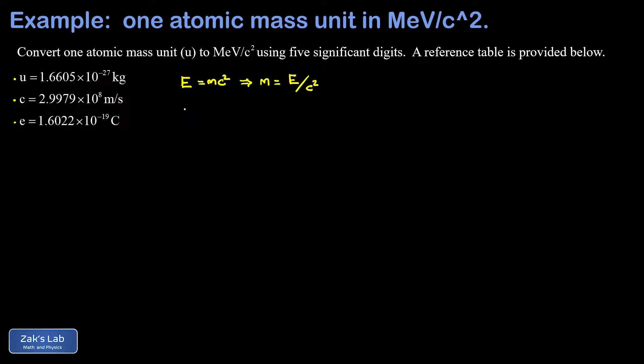So to find an atomic mass unit in these energy over c squared units, we first need to find its energy equivalence. So we go back again to E equals mc squared, and we just plug in the mass in kilograms and the speed of light in meters per second. And when we run the numbers on this, we get 1.4924 times 10 to the negative 10 joules.